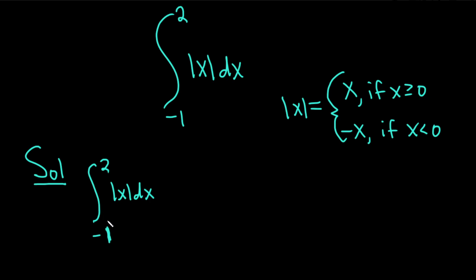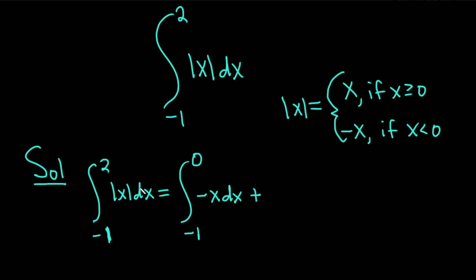We're going from negative 1 to 2. So between negative 1 and 0, x is negative. Let's break it up: from negative 1 to 0, instead of writing the absolute value of x, we write minus x, because x is negative there. Plus, from 0 to 2, when x is between 0 and 2 it's greater than or equal to 0, so the absolute value of x is just x.